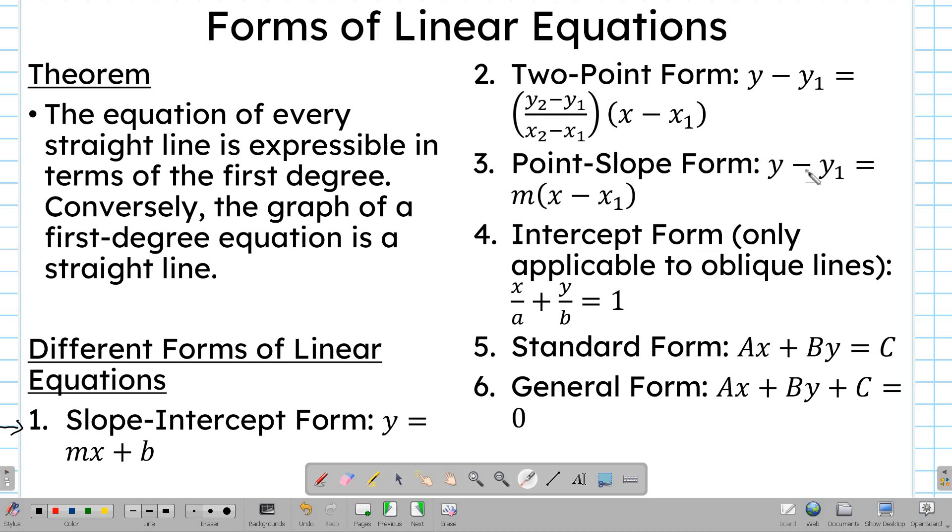That's when the coordinates of two points are given. If you're given a point x₁, y₁ and a slope, you can use the point-slope form. Instead of having the expanded form of the formula for slope, it is the actual value of slope. So that's y minus y₁ equals m times x minus x₁. That is the point-slope form.